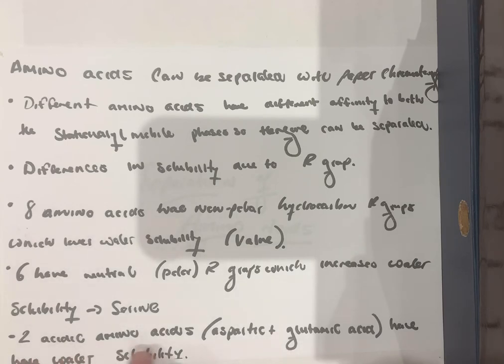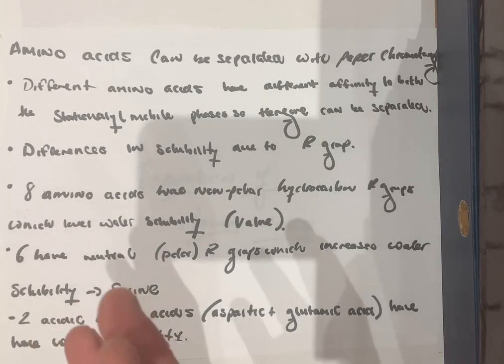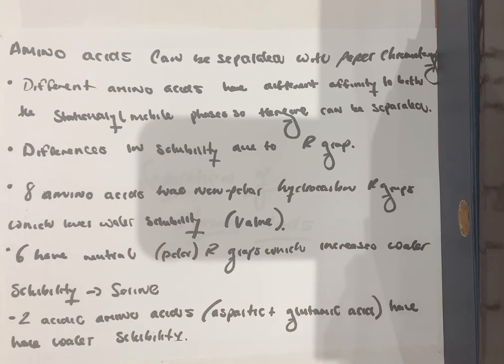Finally, we have two amino acids, aspartic acid and glutamic acid, which have an acid group as their R group. Therefore, they have extra water solubility, which is a lot more soluble. But this depends on the pH. They will be more soluble in acidic pHs because they have an acidic or a carboxyl R group.